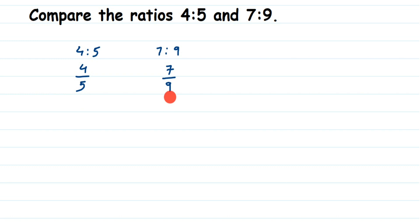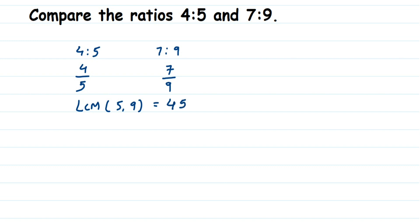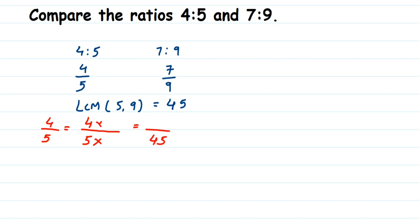This method is similar to comparing rational numbers or fractions — we've just converted the ratios into fractions. The LCM of 5 and 9 is 45. For the first fraction, 4 by 5, we want the denominator to be 45. To convert 5 to 45, we multiply by 9, so we also multiply the numerator by 9: 9 × 4 = 36, giving us 36 by 45.